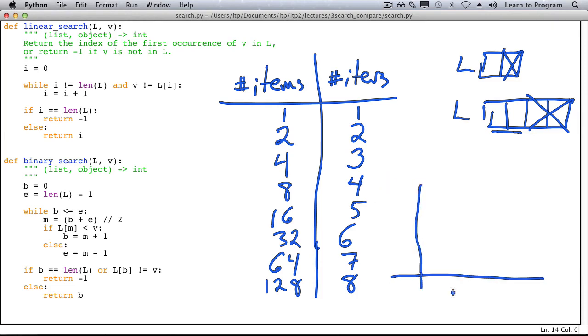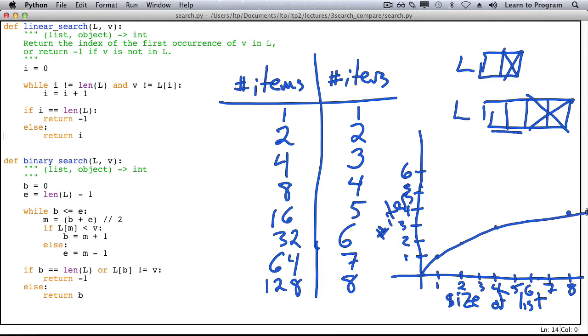Let's plot this on a graph. Our axes are the size of the list or the number of items and the number of iterations. If the list has one item in it then there is one iteration, two items, two iterations, four items, three iterations, eight items, and four iterations. When we double the size of the list we increment the number of iterations by one.